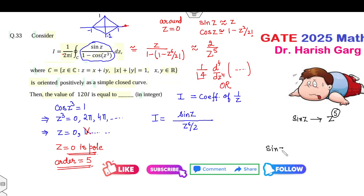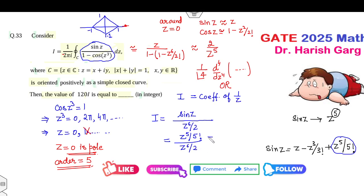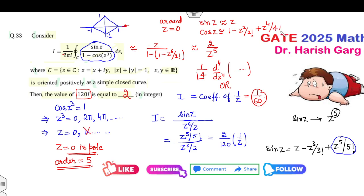The series expansion of sin(z) is z − z³/3! + z⁵/5! and so on. So the coefficient of z⁵ in sin(z) is 1/5! = 1/120. Dividing by z⁶/2 gives (2/120) · (1/z), so the coefficient of 1/z is 2/120 = 1/60. Substituting 1/60 here, the answer is 2. This is the simplest approach — always try to simplify as easily as you can rather than complicating the problem.